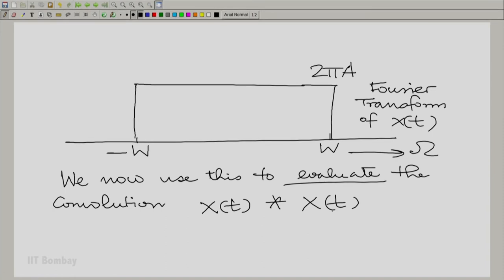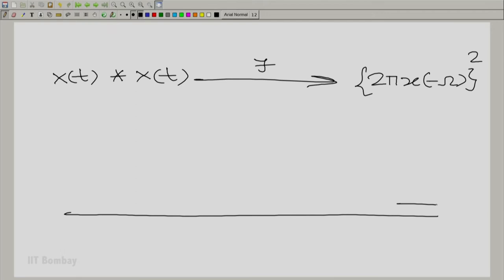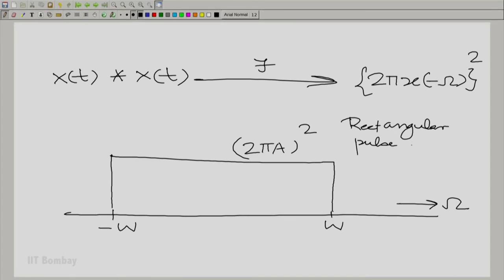But here, we have a very simple answer. What is the Fourier transform? You can easily find out the convolution of X(t) with X(t). We now use this to evaluate the convolution X(t) convolved with X(t). If I take the Fourier transform, X(t) convolved with X(t) has the Fourier transform (2π·x(-ω))² and we can easily write this down, sketch this. It is simply (2πA)² - the same rectangular pulse but with a different height.